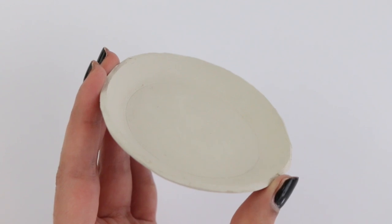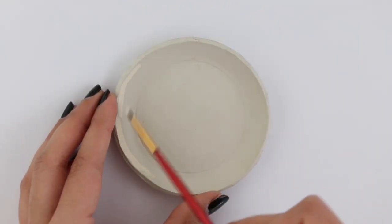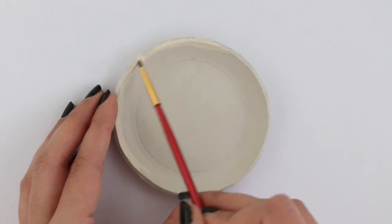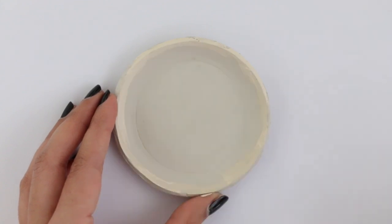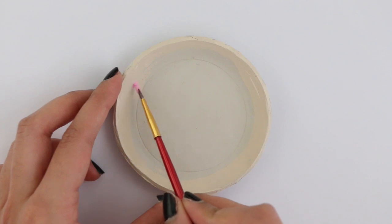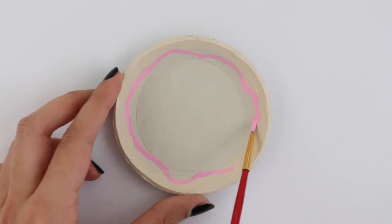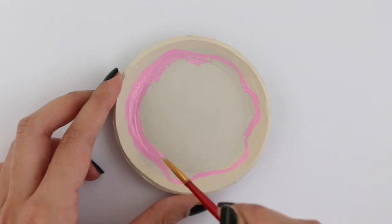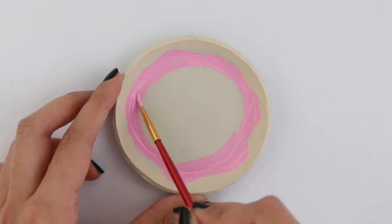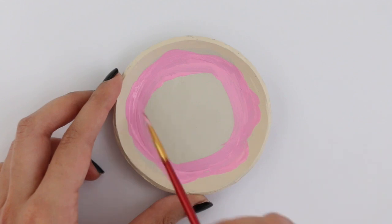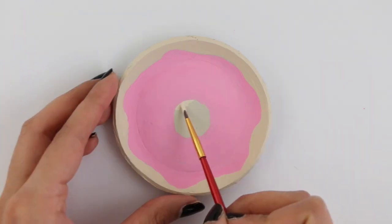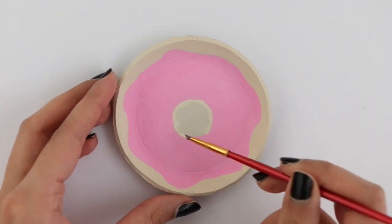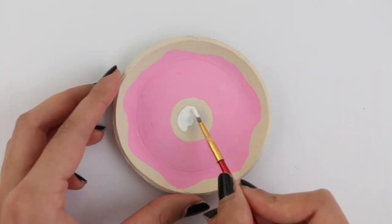Using acrylic paint, I'm painting on the donut. I started with some beige and I'm going to paint the outer rim. Then I went in with a bright pink for the icing.